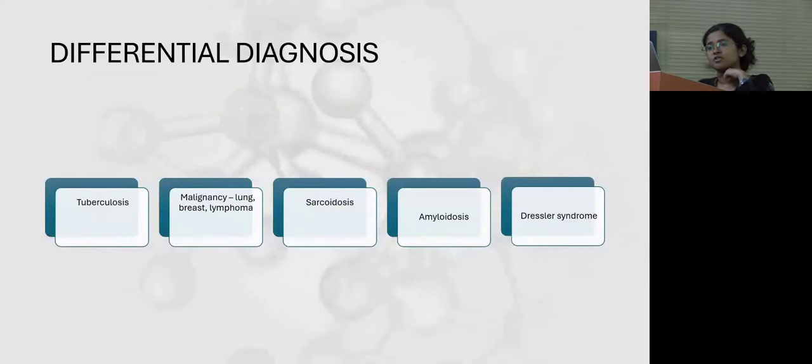The differential diagnosis thought at this point of time was tuberculosis, possibility of malignancy was considered, mostly lung, breast, or any lymphomas. Sarcoidosis, amyloidosis were considered, and Dressler syndrome was also considered in view of the pericardial effusion.